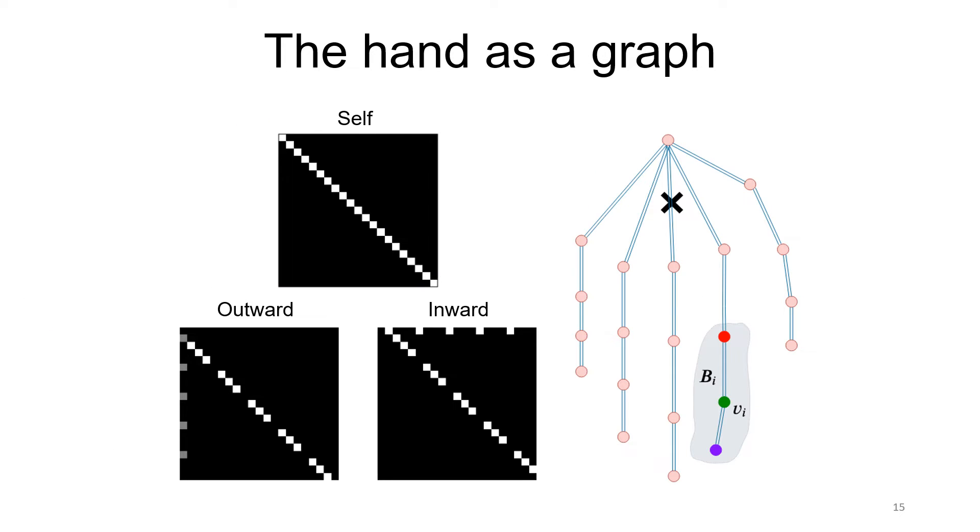Since our model is graph-based, first we define an adjacency matrix of the hand, where all 21 joints are the vertices and their connections are links. The hand center of gravity is marked by X, and we divide the graph's links to three subsets.